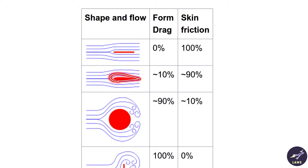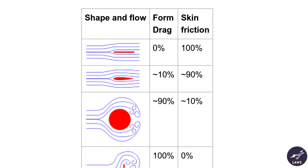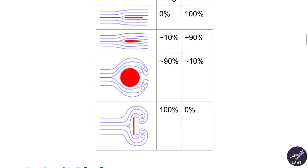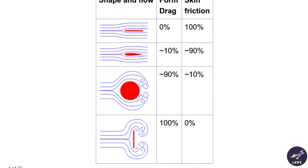Looking at different shapes: an aerofoil shape like our wings has around 90% skin friction and minimum form drag. A circular shape has maximum form drag around 90% and only 10% skin friction. A flat plate perpendicular to the airflow has 100% form drag and 0% skin friction. So according to the shape of the object, your form drag and skin friction drag will vary.